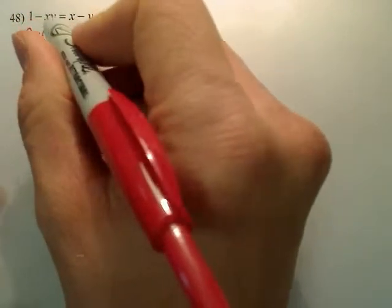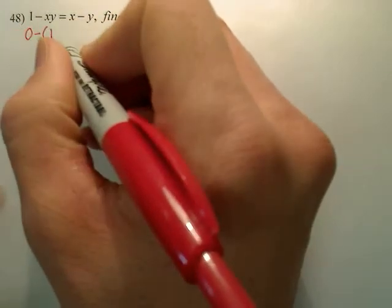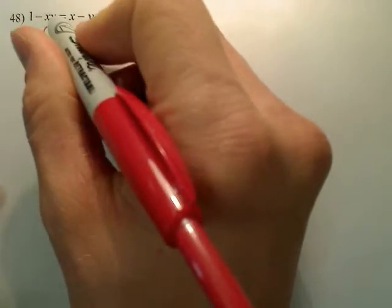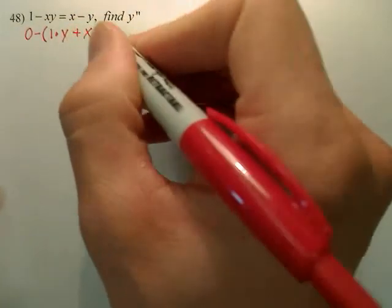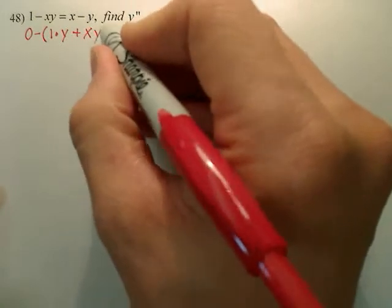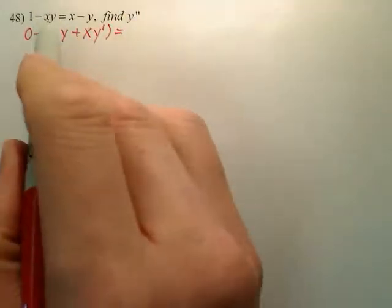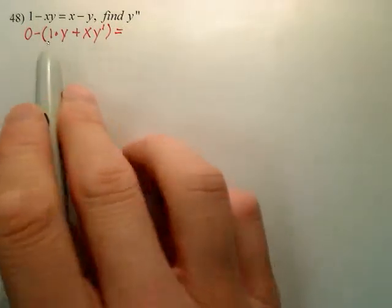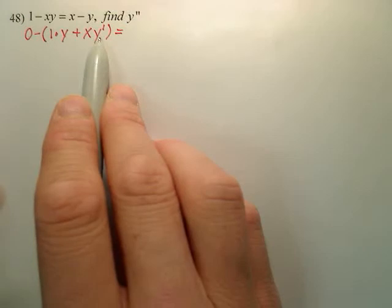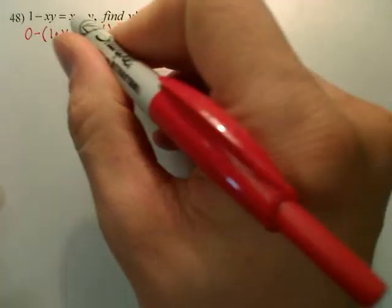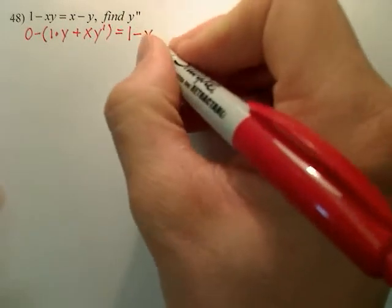Right here, we have a product rule. So to derive this, the first derivative of x is just 1, times leave the y, plus leave the x and derive the y. Derivative of y is y prime. So xy is derived as follows: derive the x, leave the y, leave the x, derive the y. Equals derivative of x is simply 1, derivative of y is simply y prime.